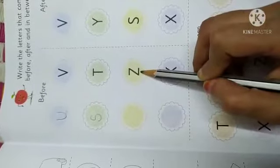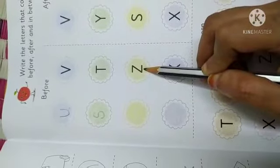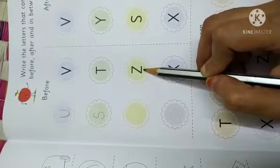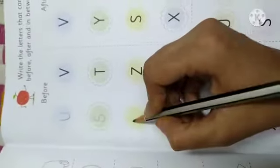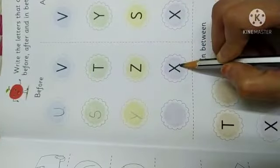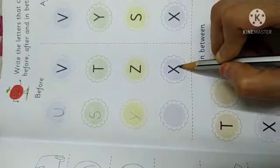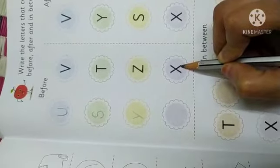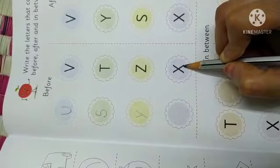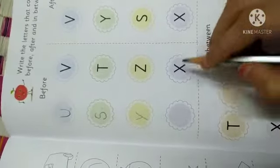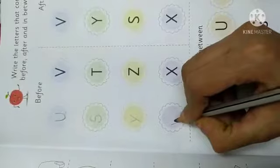So, which letter is this? Z. What will come before Z? It's easy. Y. What is this? Which letter is this? X. Before, what will come? Which letter will come? W.